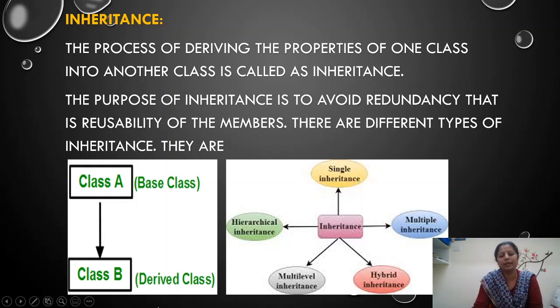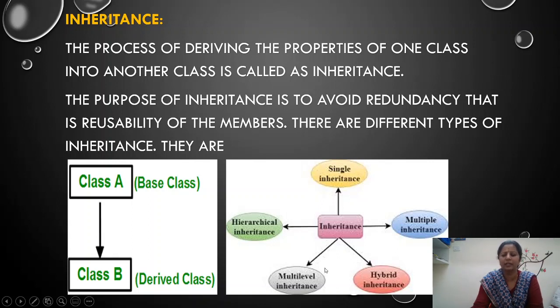There are five different types of inheritance: single level inheritance, multi-level inheritance, multiple inheritance, hierarchical inheritance, and hybrid inheritance. We will discuss these in detail in the upcoming chapter.